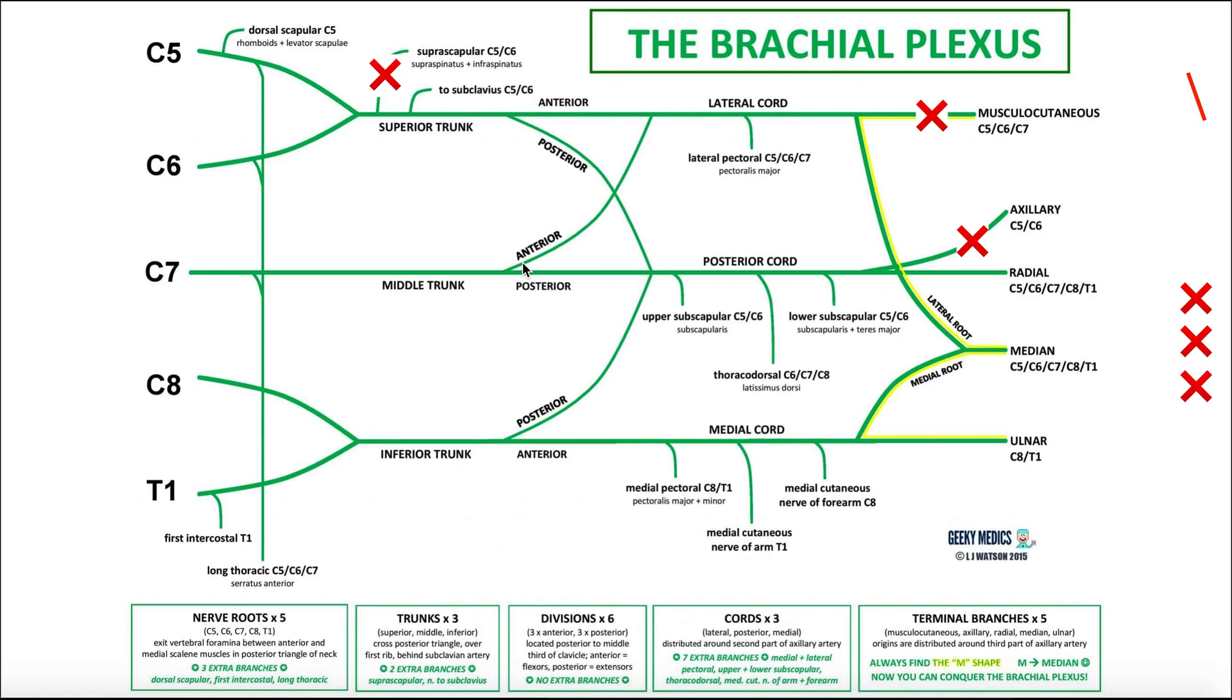Could it be in the anterior division of the middle trunk? Well, no, because not only does the suprascapular nerve not have any contribution from this anterior division, but actually neither does the axillary nerve, right? Because the anterior division comes off the middle trunk and then only the musculocutaneous nerve receives any piece of this anterior division.